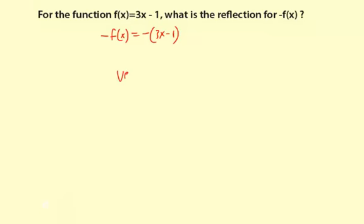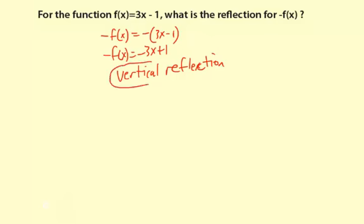So we have a vertical reflection. And as far as the new function, let me just go ahead and finish that part too. I'm going to distribute the negative. So negative f of x equals negative 3x, and then negative times negative 1 makes positive, so plus 1. Now, the question is only asking for the reflection in this case, but I wanted to go ahead and do the new function as well so you could see it.